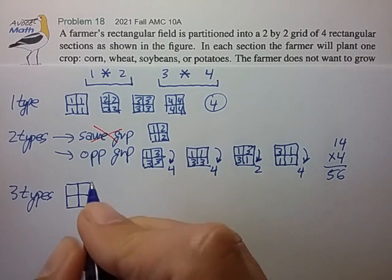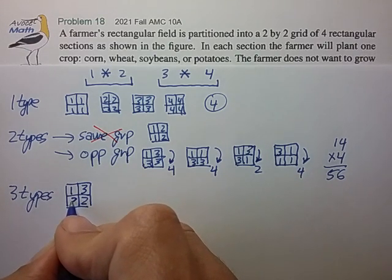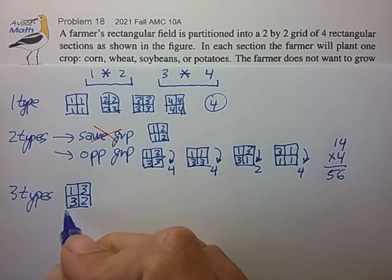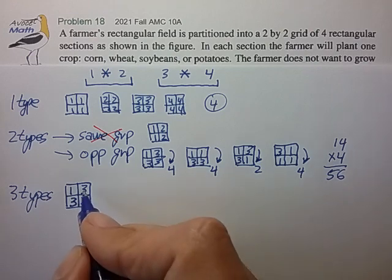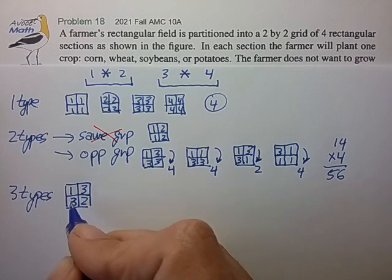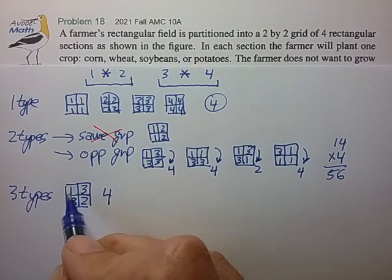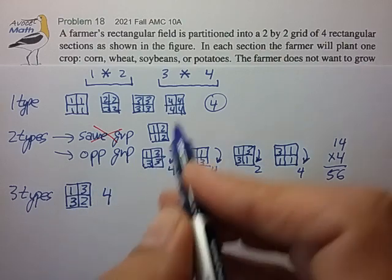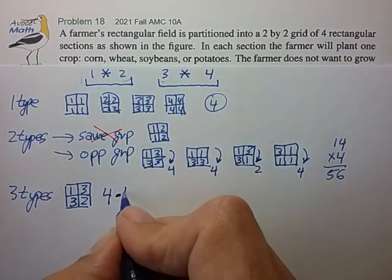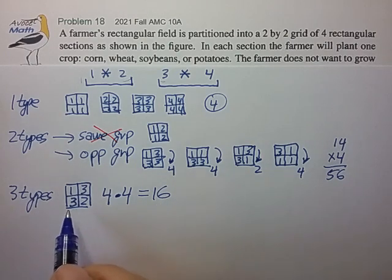So just for argument's sake, if we pick one, two, and three, we'll have to double up the three. So the one and the two will have to occur across the diagonal. The three will occur across the other diagonal. We could swap the one and the two. We could also rotate this into two equivalent positions. That's four. That's for having chosen one, two, and three. We could have eliminated either four, three, two, or one from our selection. So there are four different ways to do that. So that gives us 16 different total arrangements for three types of crops.